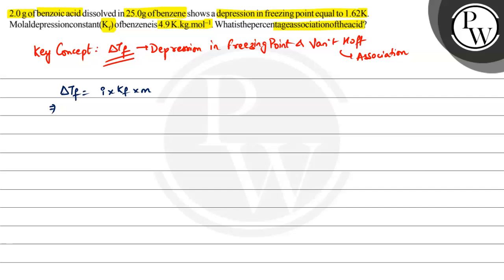Delta Tf is going to be equal to 1.62. I is unknown. Kf has been given as 4.9 and molality is number of moles of solute divided by mass of solvent in kg. Number of moles - we will write the weight of the solute, which is 2 grams divided by molar mass of C6H5COOH, which is 122.